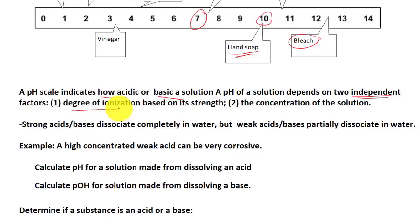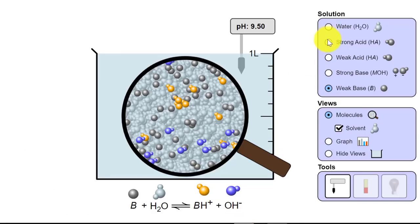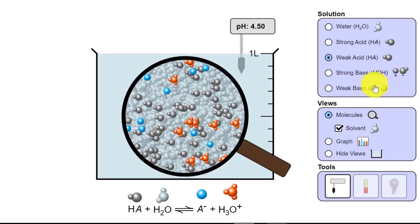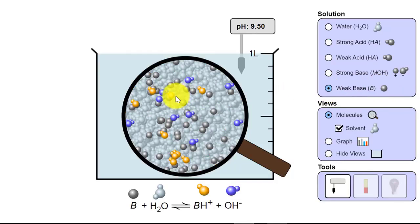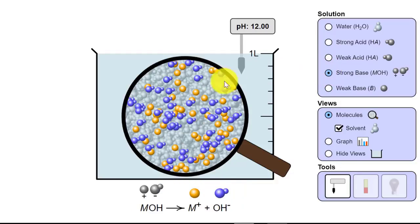Looking at the simulation, a weak acid has very little dissociation — you can see only a small orange H3O+ portion. But when I switch to a strong acid, it has completely dissociated — none of the original acid remains. The same is true for bases: a weak base still has a lot of the base left with only some dissolving into OH-, but a strong base has completely dissociated, leaving none of the original base.